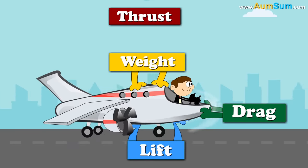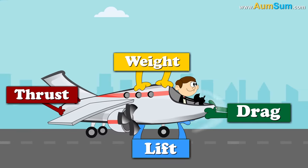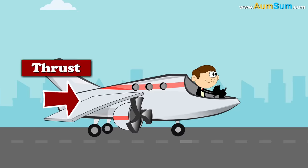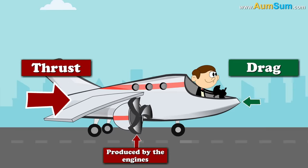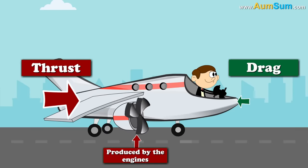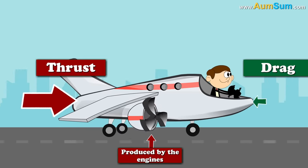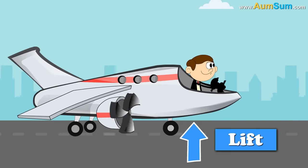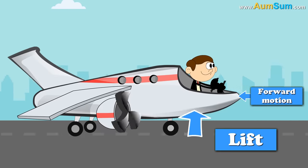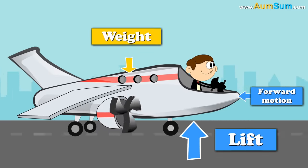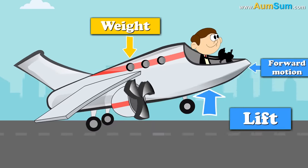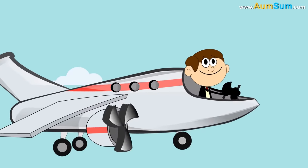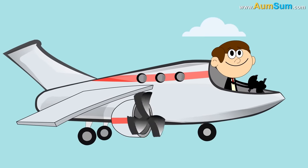This force is generated by the engines of the airplane. Now, when the force of thrust produced by the engines is greater than the force of drag produced due to air resistance, the airplane moves forward. Also, when the force of lift produced due to forward motion is greater than the force of weight produced due to gravity, the airplane moves upward. In simple terms, this is how an airplane flies.